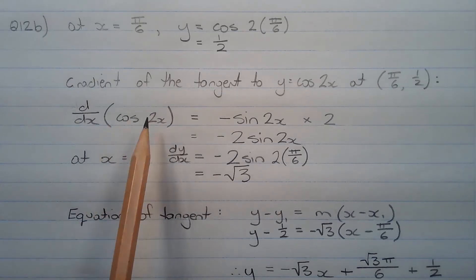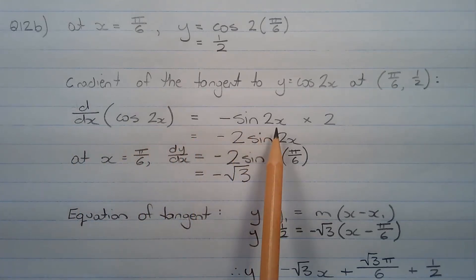Because we're dealing with a function of a function, we need to apply the chain rule. So that's the derivative of the outer function multiplied by the derivative of the inner function. So the derivative of cos 2x is equal to negative sine 2x multiplied by 2, which equals negative 2 sine 2x.